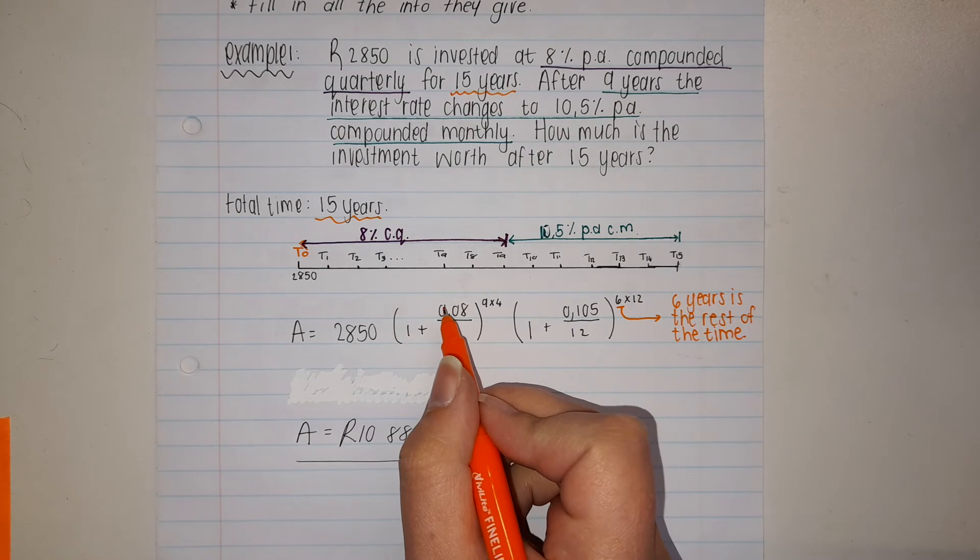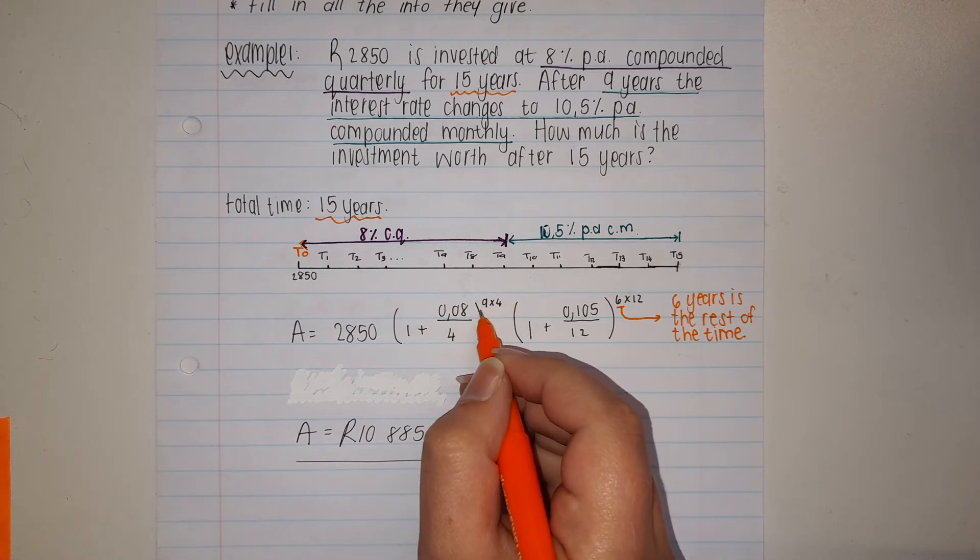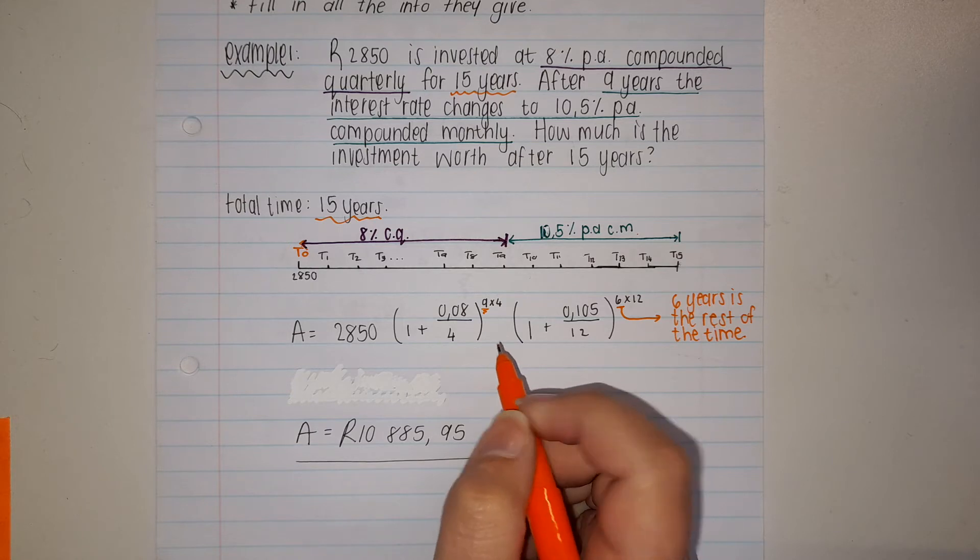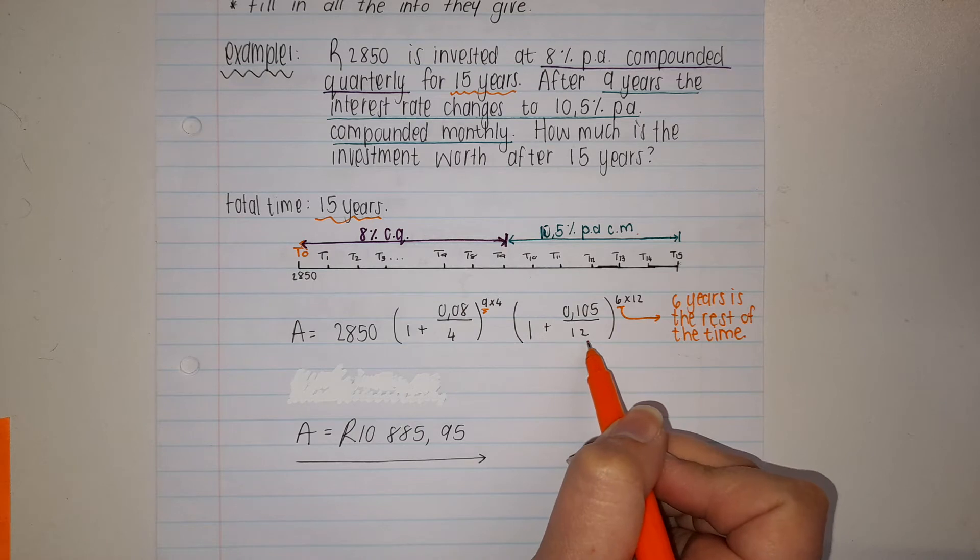Firstly, I had 0.08 over 4, compounded quarterly for 9 years. Please note my time: 9 years. Then it changed to 0.105 over 12, which is monthly.